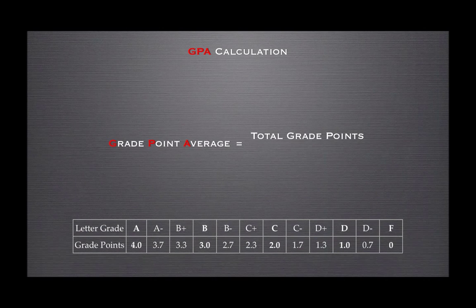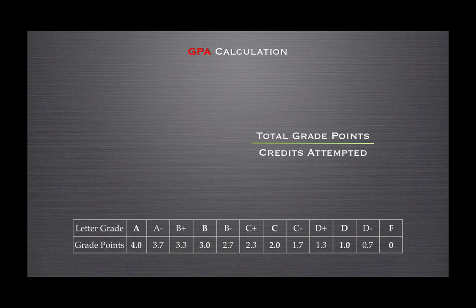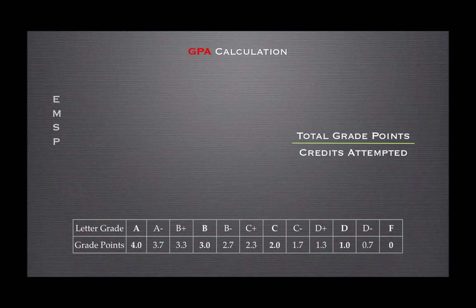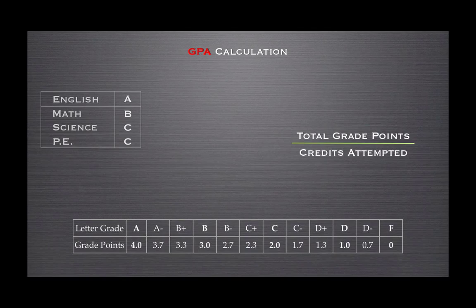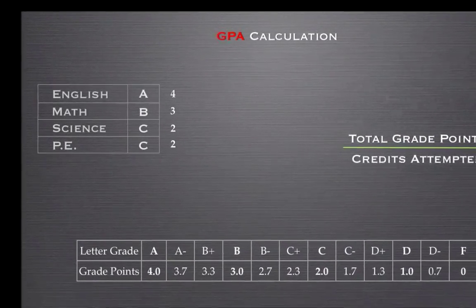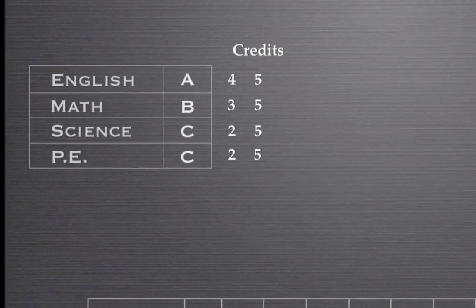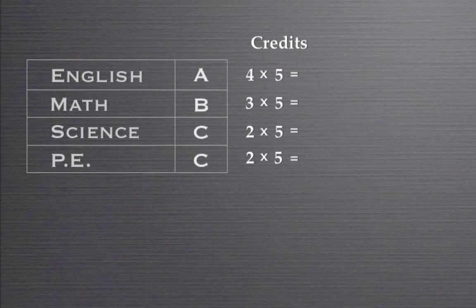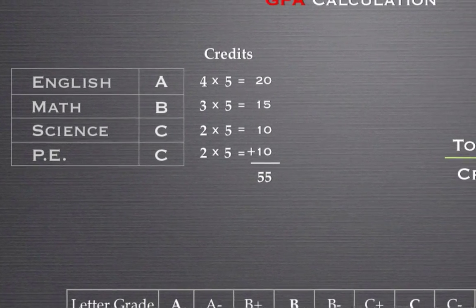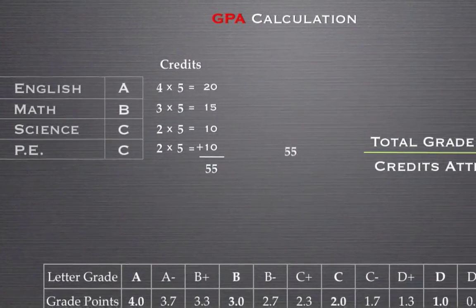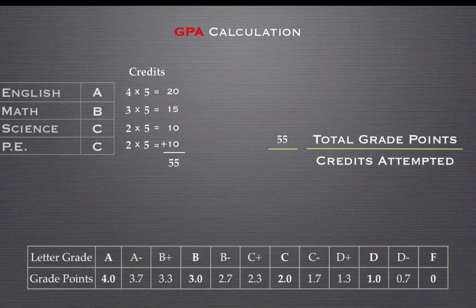Grade point average is derived from taking the total grade points divided by the number of credits attempted. Let's look at an example. Say that a student took the following courses and earned these grades. First, we convert the letter grades to their numerical values. Let's assume that all of these courses are five credits each. We then multiply the numerical value of each letter grade by 5 and sum the total grade points. We now have 55 as our total grade points. We then divide 55 by the total number of credits attempted.